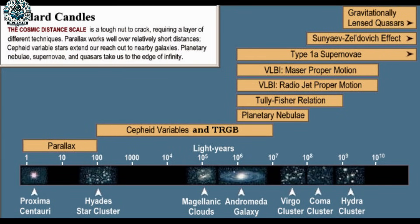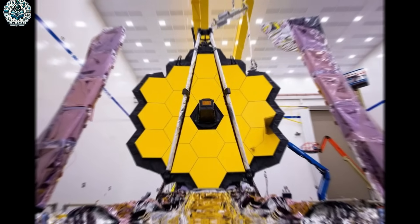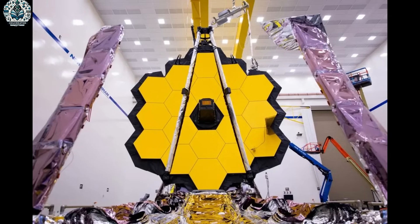We also use standard candles. Some stars pulse in a special way that tells us their actual brightness. Comparing this with how bright they appear from Earth, we can calculate their distance. It's like guessing how far away a lamp is based on its brightness.